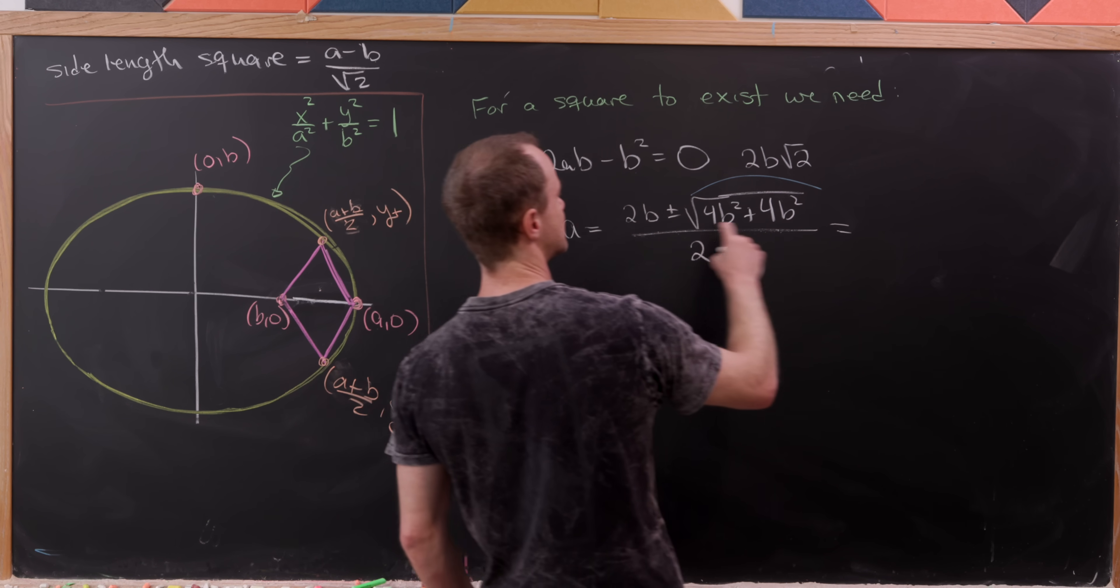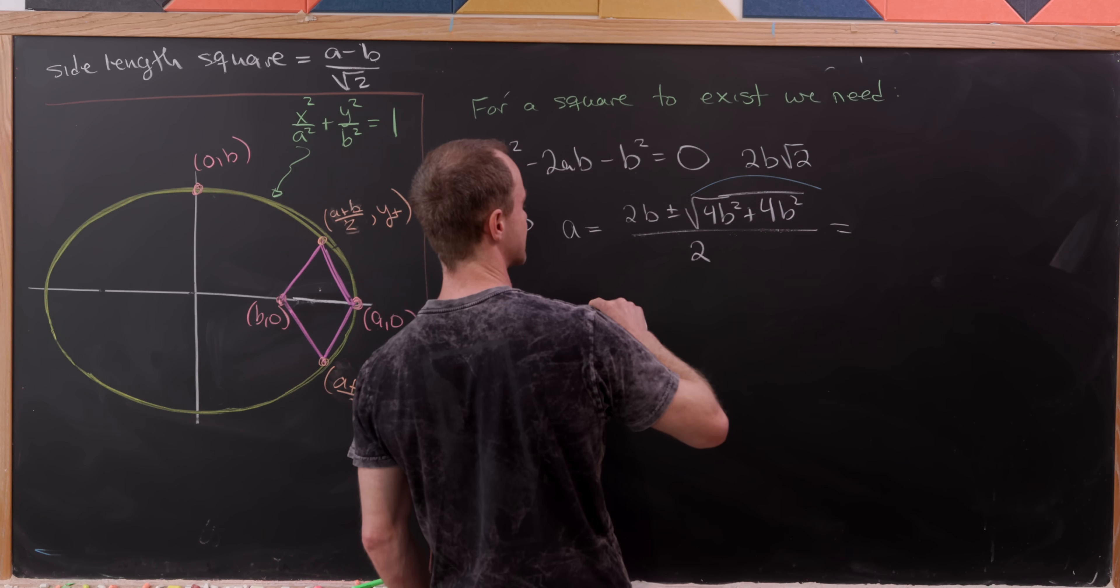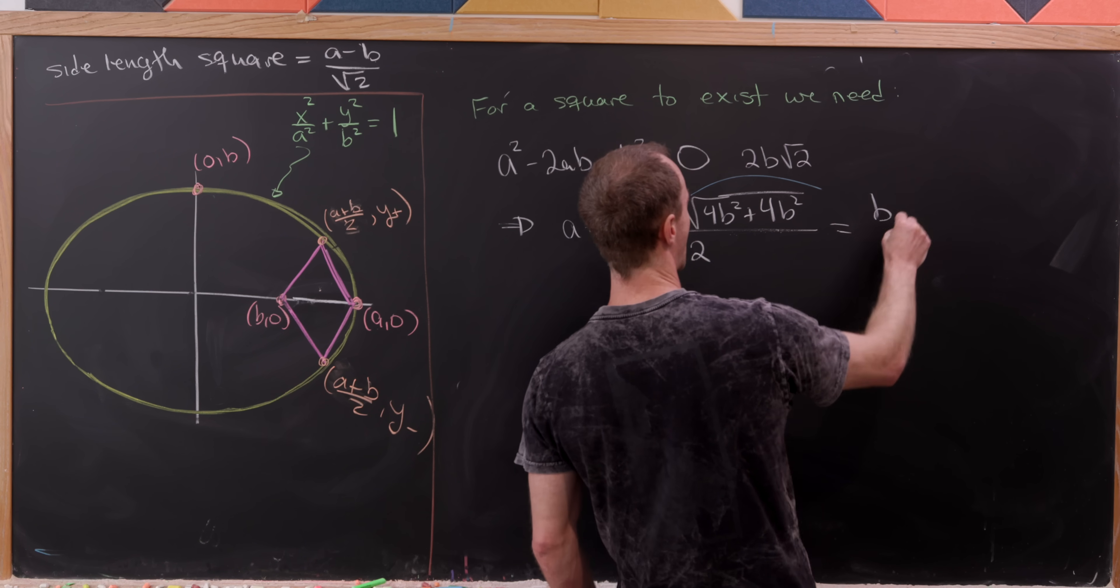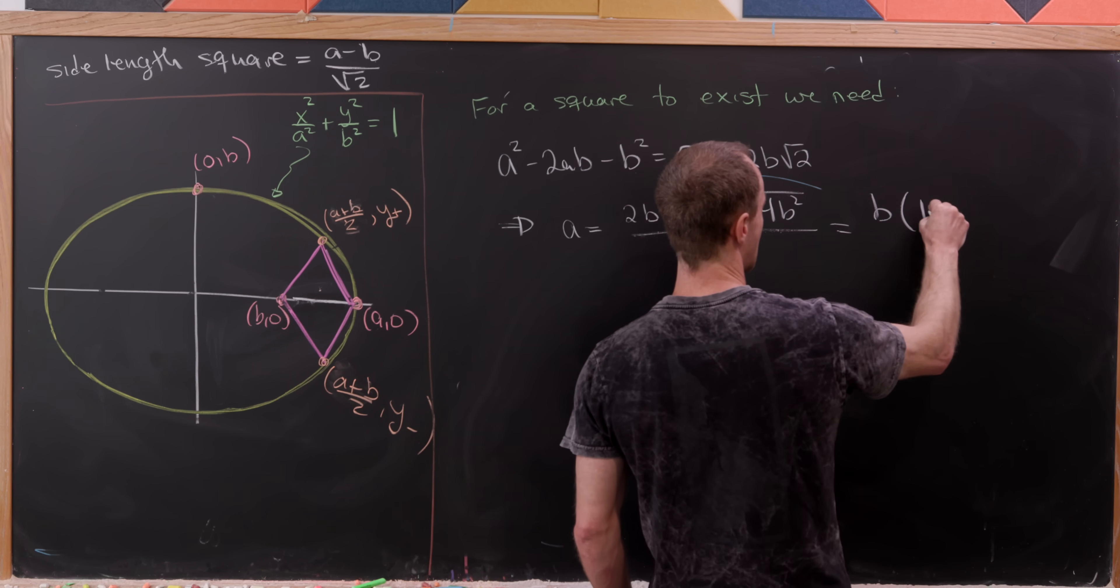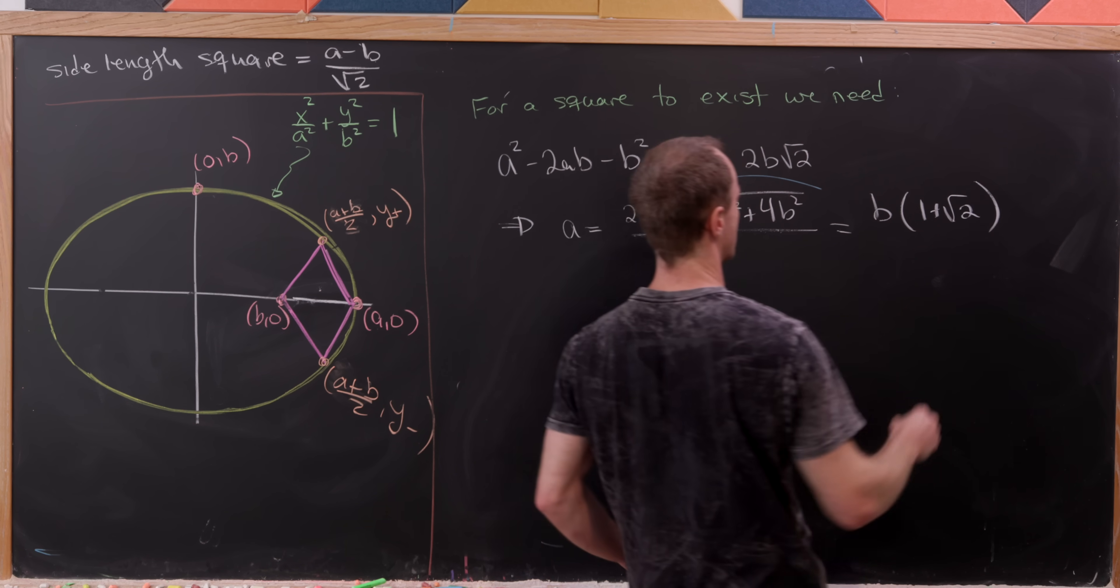We're going to have these 2s canceling. We can factor a b out and we'll have b(1 + √2).